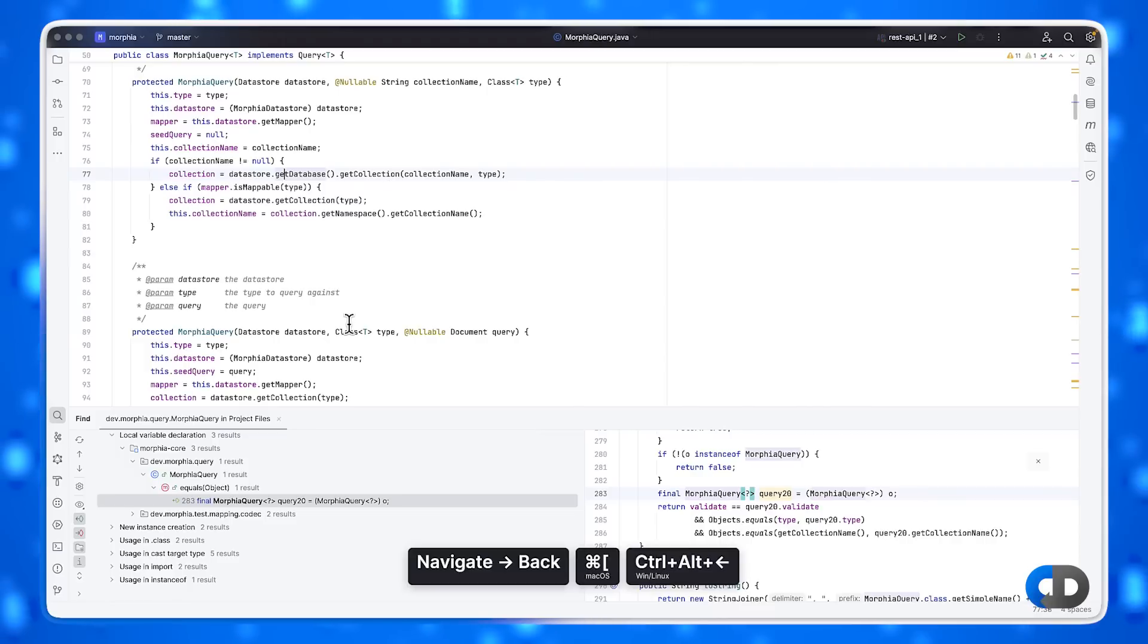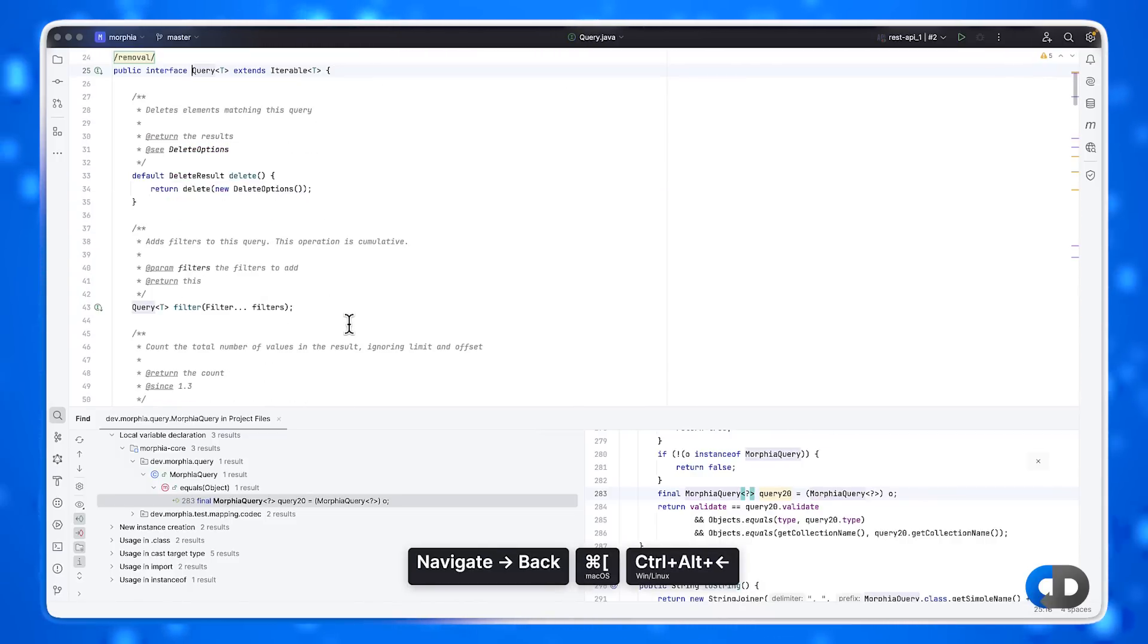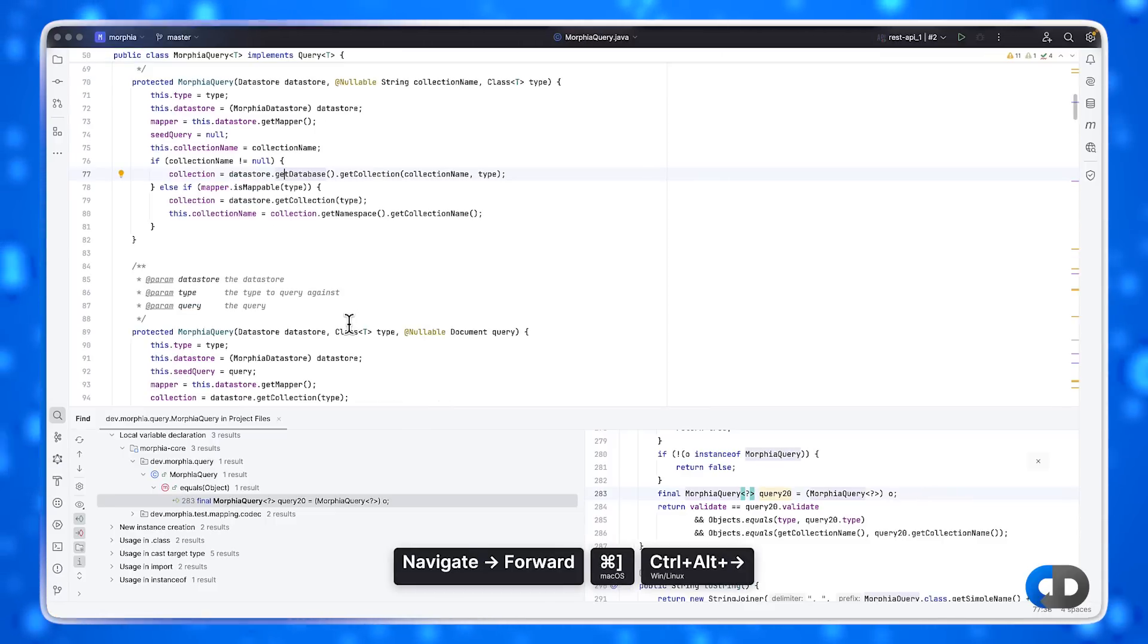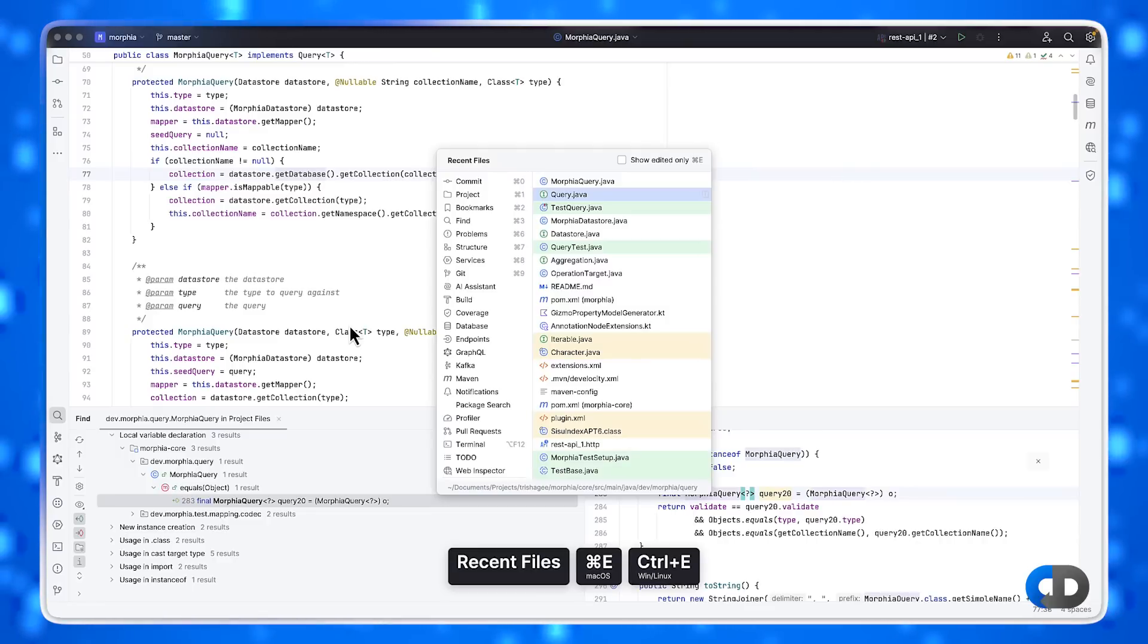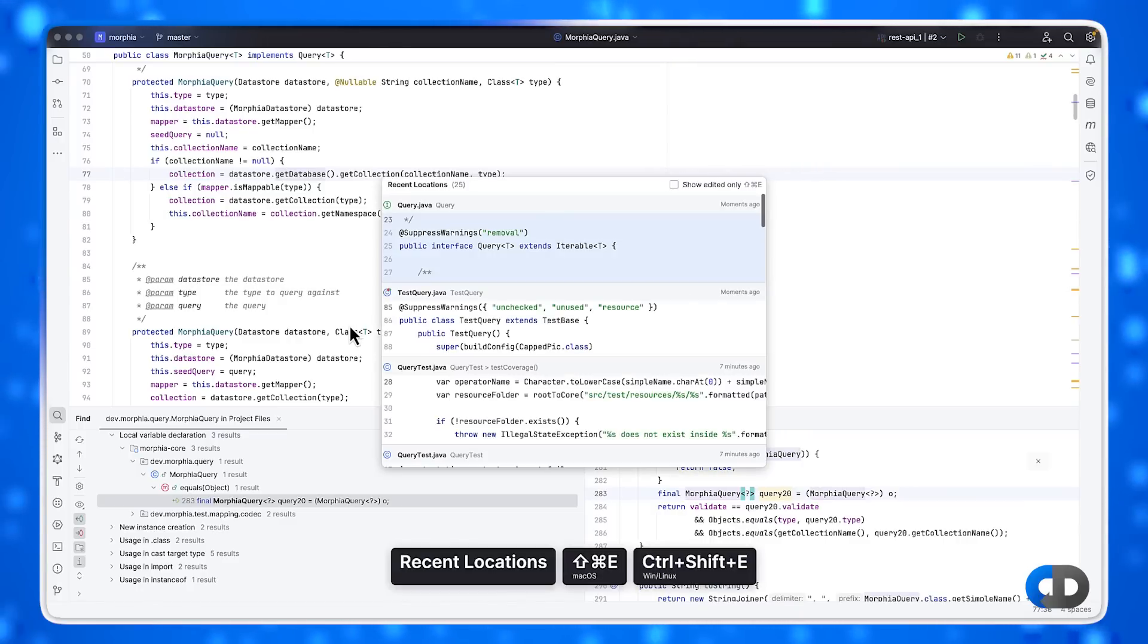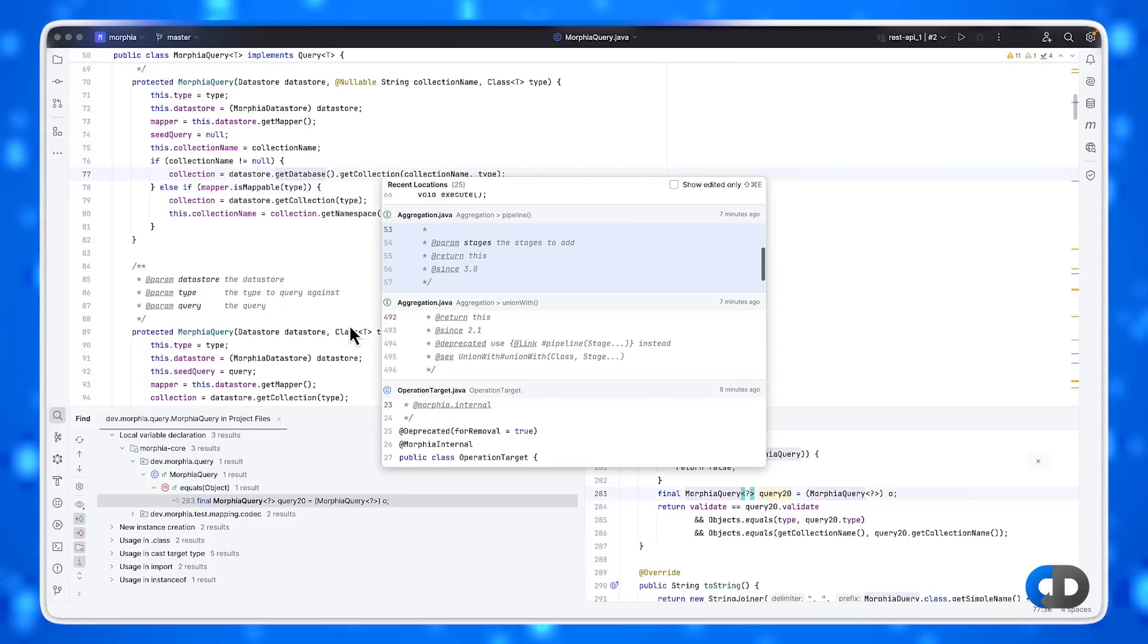You'll also see that I'm using navigate back and navigate forward, which I use quite a lot to just figure out exactly where I've been and where I need to be next. You can also use recent files to see all the files you've been working with recently, or recent locations, which includes snippets within the same file sometimes. This will take you back to certain bits of files that you've been looking at.